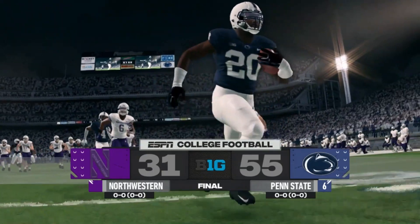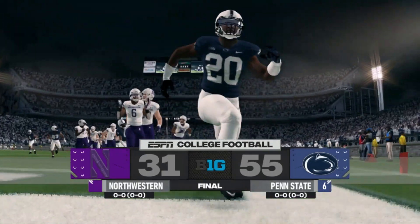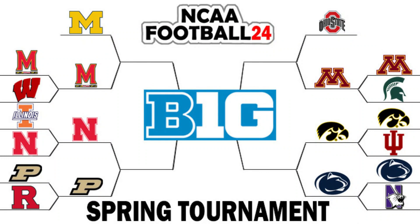Maybe not a ton of upsets here in the first round. Let's take a look at the updated bracket. We're going to see Michigan take on Maryland. Nebraska pulled off an upset over Illinois — seeding was done based off of last year's standings — so they face Purdue. Purdue gets the win over Rutgers. Ohio State will face Minnesota. And Iowa will take on Penn State in the final matchup in round number two.